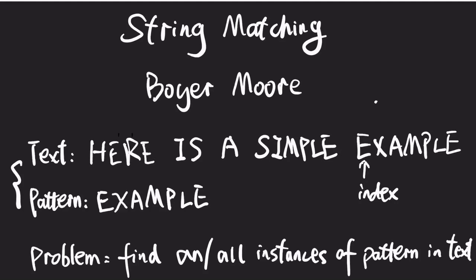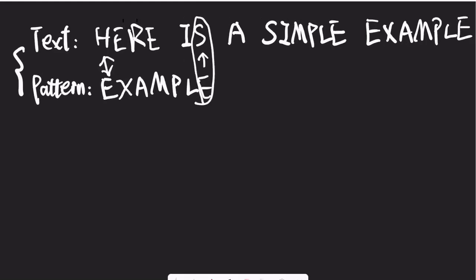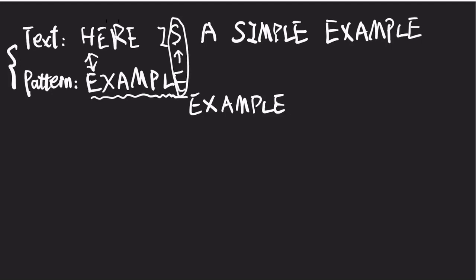In this example, there is a match — the output is the index of the first letter. Different from other string matching algorithms which always compare from left to right, Boyer-Moore algorithm compares from right to left. In this case, the characters are different and S does not exist in the whole pattern string, so we can skip all the way to the right and compare again. This is the bad character rule.